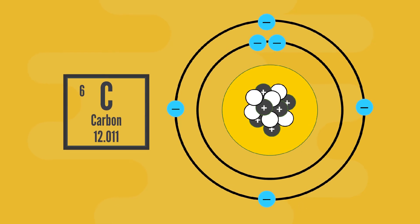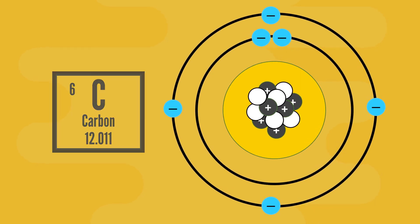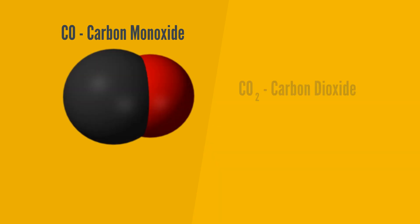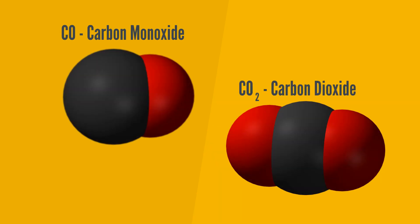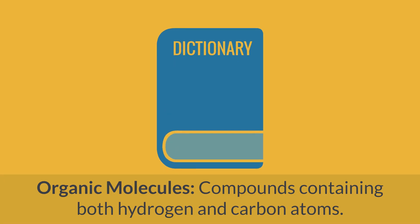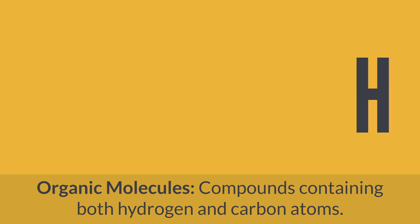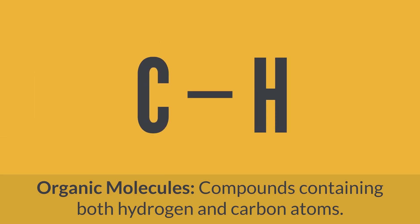Organic compounds are generally any chemical compounds that contain carbon. By this definition, simple molecules such as carbon monoxide and carbon dioxide would be defined as organic molecules. However, these simple molecules are exceptions as they behave more like inorganic molecules. Therefore, a more accurate definition of organic molecules are compounds containing both hydrogen and carbon atoms.